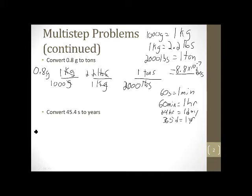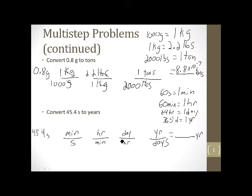All right, this one, I'm really going to have to write small because I've got a lot of steps. This is a four-stepper. So 45.4 seconds is going to be equal to some number of years. So seconds to minutes. What do I want? Minutes. What do I got? Seconds. I can go to hours. So I want hours. I got minutes. Next days. I want days. I have hours. And finally, I want years. And I have days.